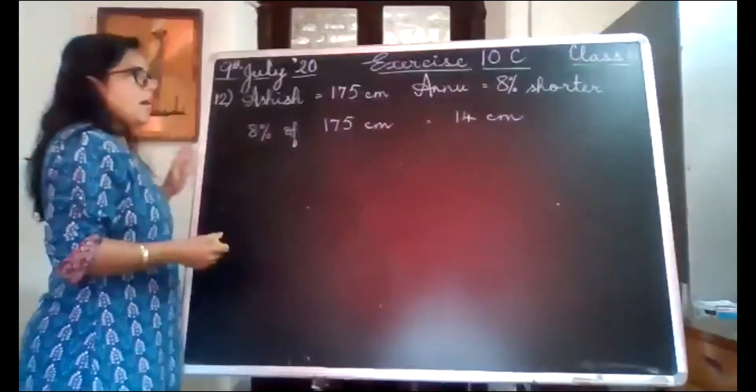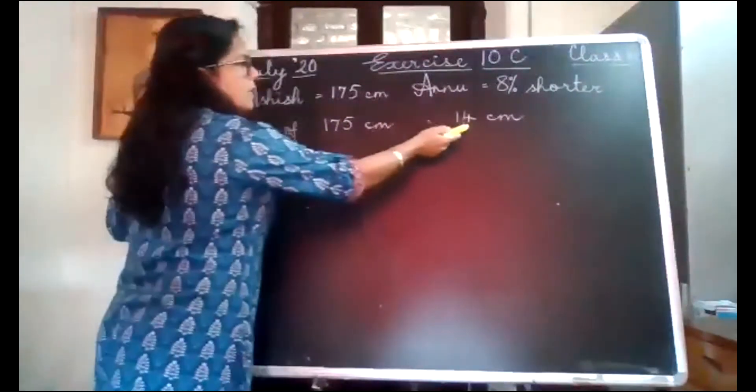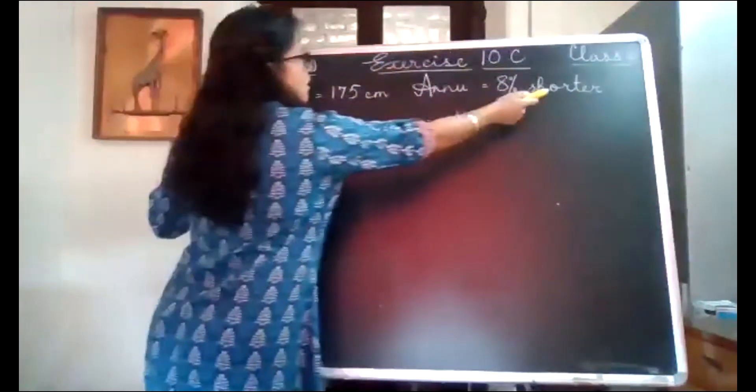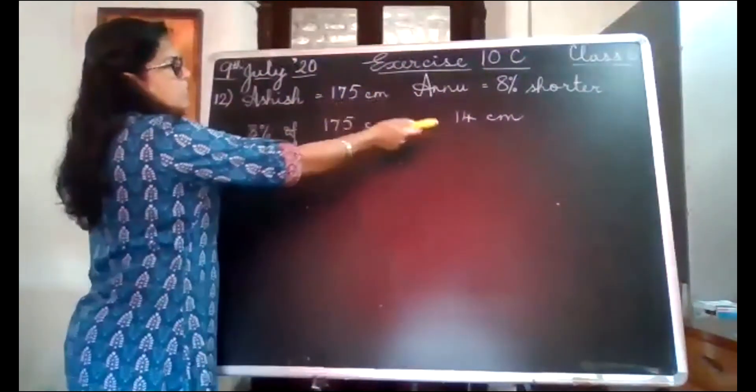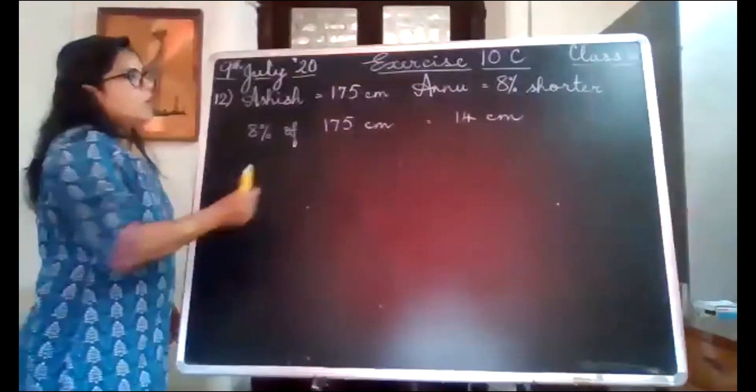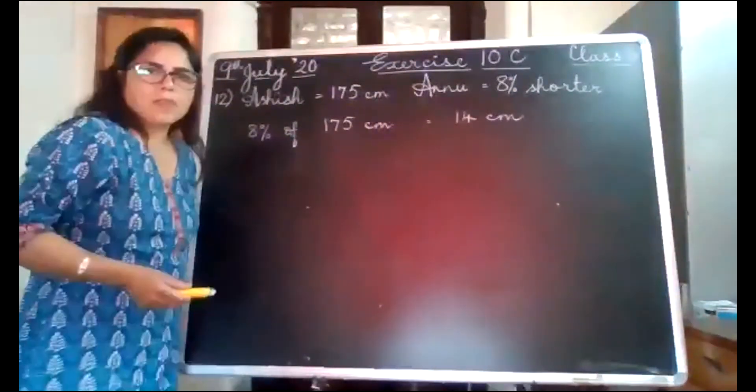Now you know that Anu is 14 cm shorter than Ashish. So from 175 cm, you will subtract the 14 cm in order to get Anu's height.